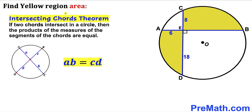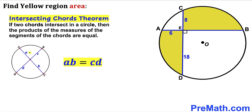Let's recall the intersecting chords theorem. According to this theorem, if two chords intersect in a circle, then the product of the measures of the segments of the chords are equal. Here we have chords AC and BD intersecting each other, giving us segments A, B, C, and D. So therefore, according to this theorem, the product A times B is equal to C times D.